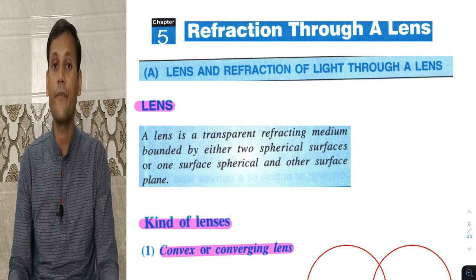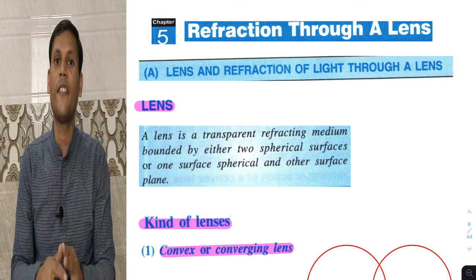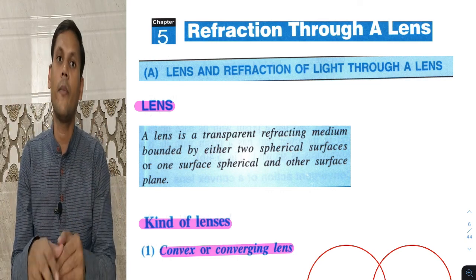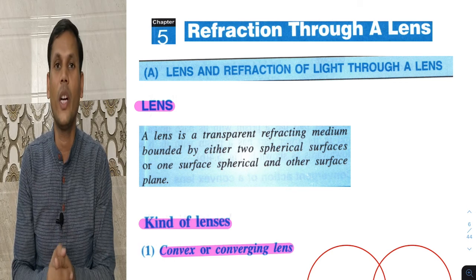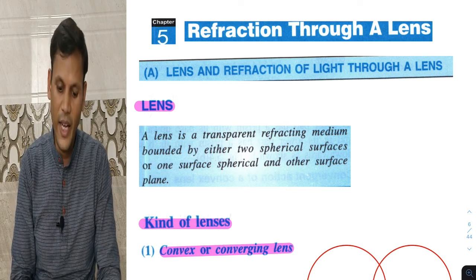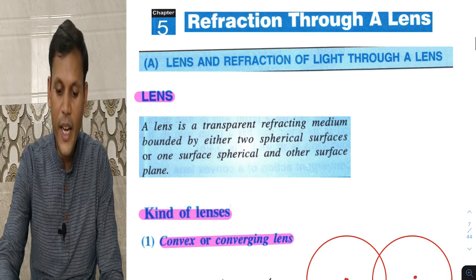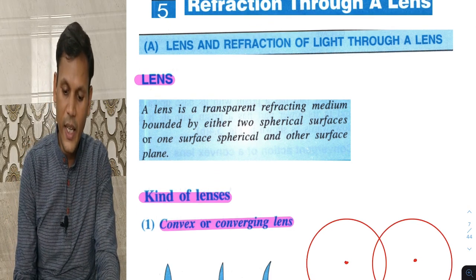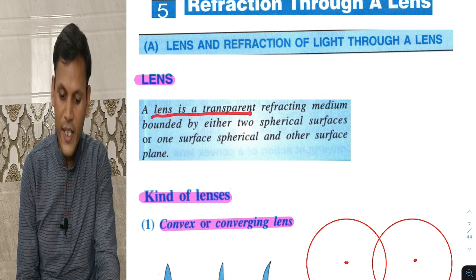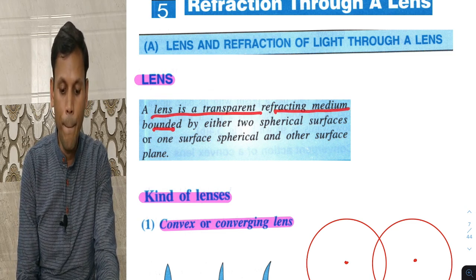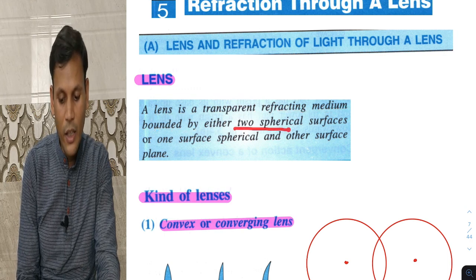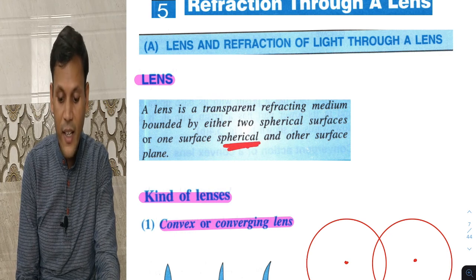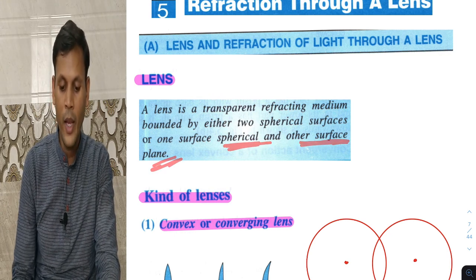Lenses are part of spherical surfaces. If we join two spherical surfaces together with a solid part, that will be called a lens. A lens is a transparent refracting medium bounded by either two spherical surfaces, or one surface spherical and the other surface plane.